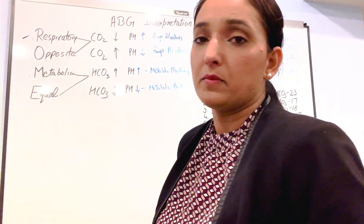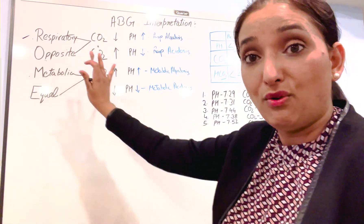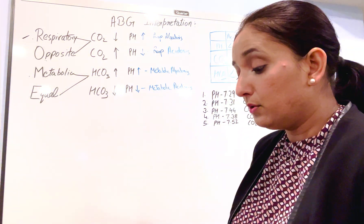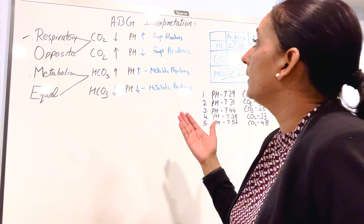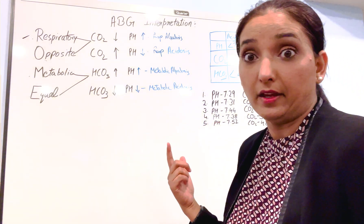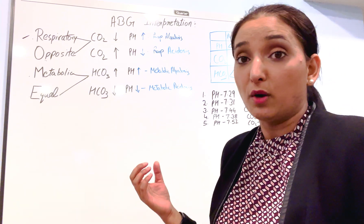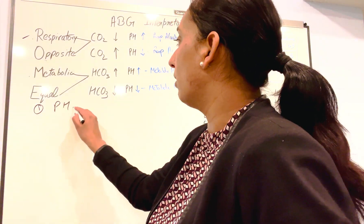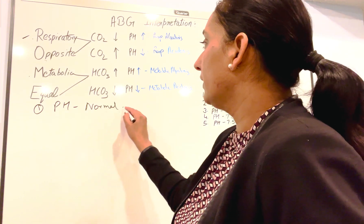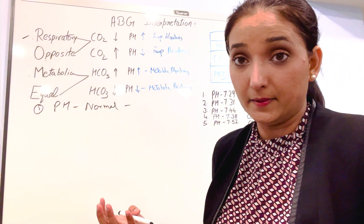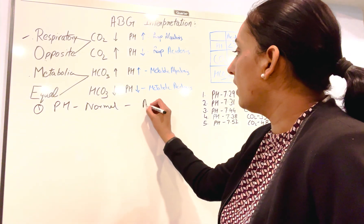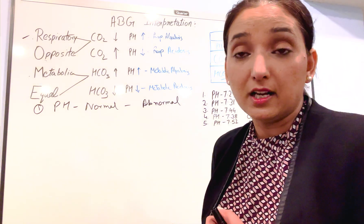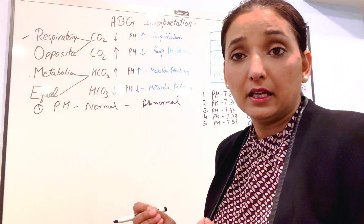That is ROME: R-O-M-E. The ROME method will help you solve all these problems. When you get a question related to ABG interpretation, ask yourself first: is pH normal or abnormal? If pH is normal, that means it is compensated. If pH is abnormal, that means the body may be partially compensated or fully uncompensated.